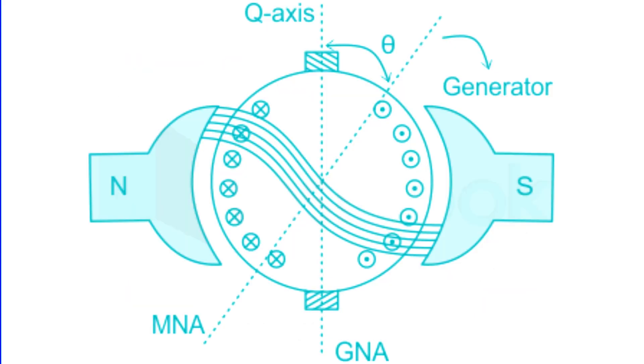Due to cross-magnetization, the magnetic neutral axis shifts towards the rotation direction in a DC generator and in the opposite direction in a DC motor when loaded.